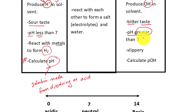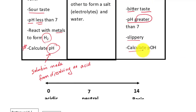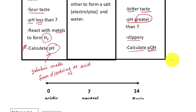Another characteristic of bases is that they are very slippery — think of soap, like hand soap. When you have a solution made from dissolving a base, you have to calculate the pOH first. You cannot calculate pH directly from a solution that's made from a base.